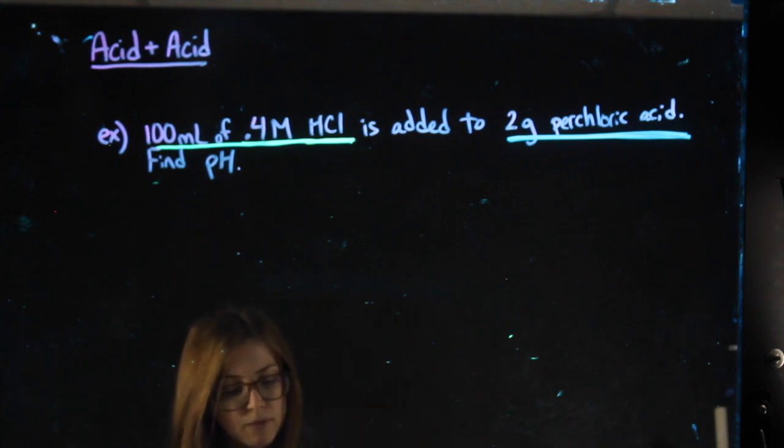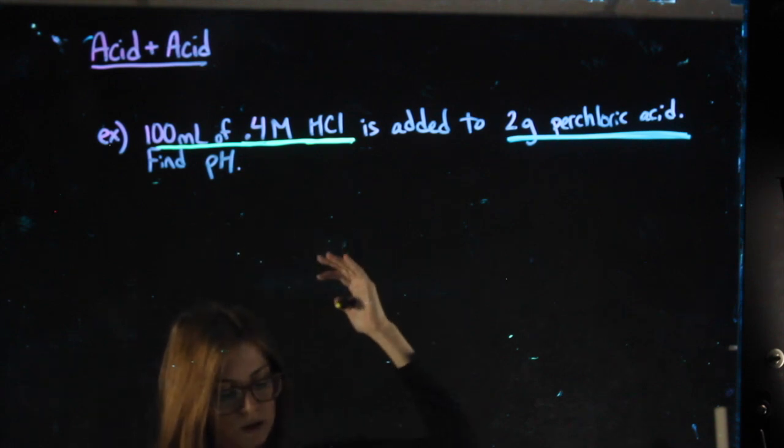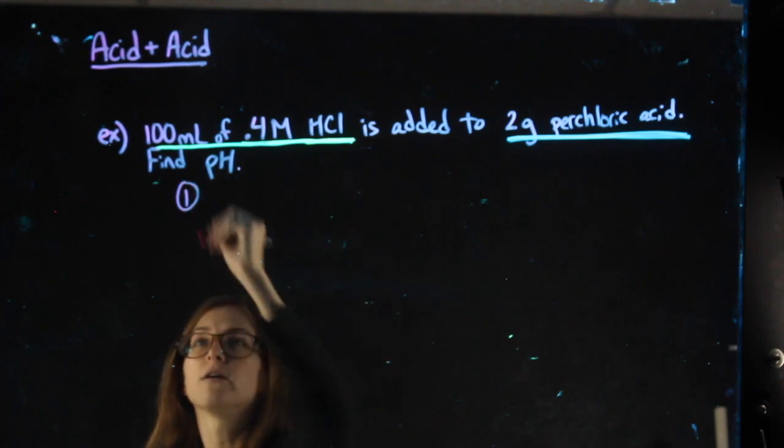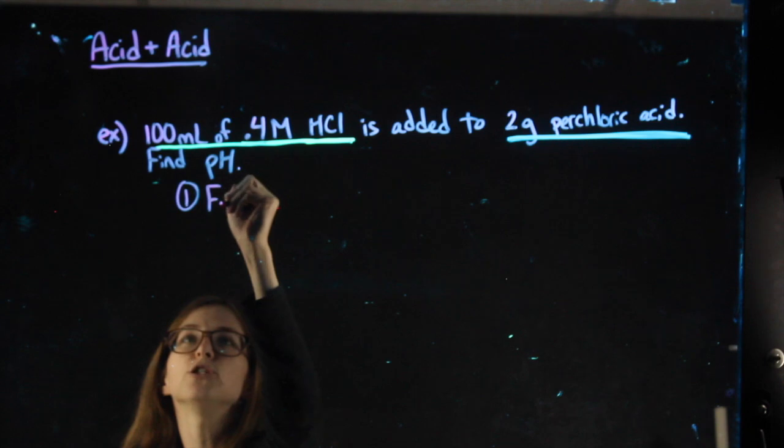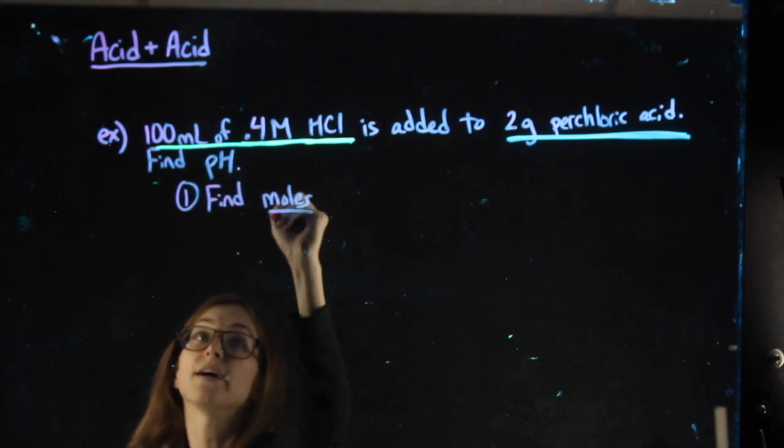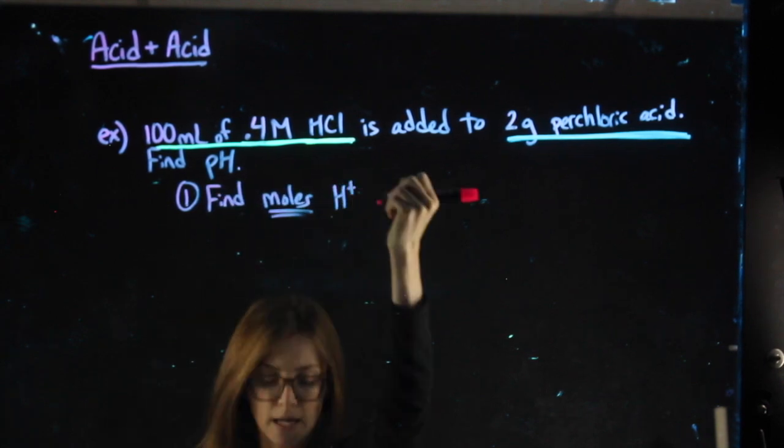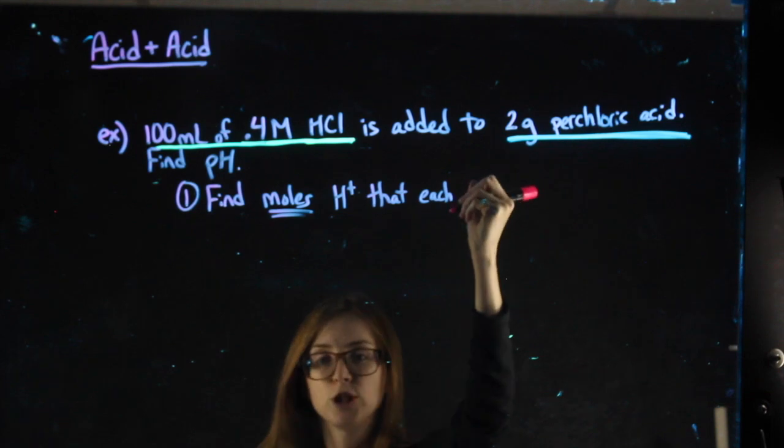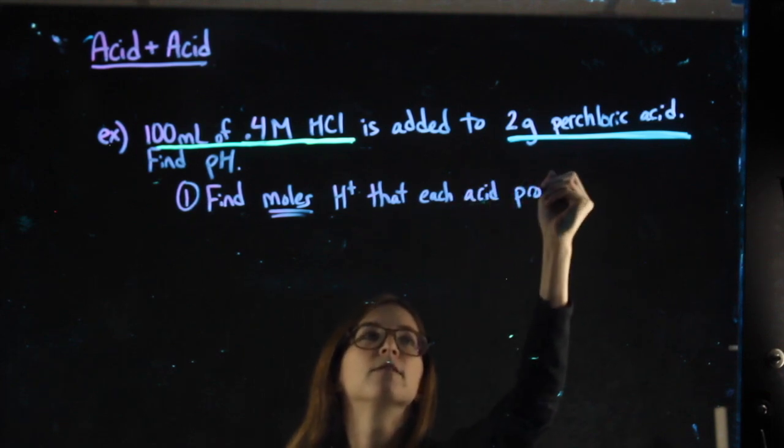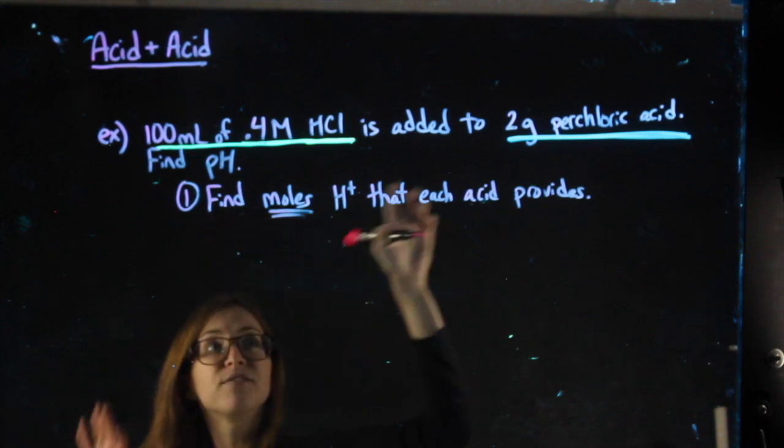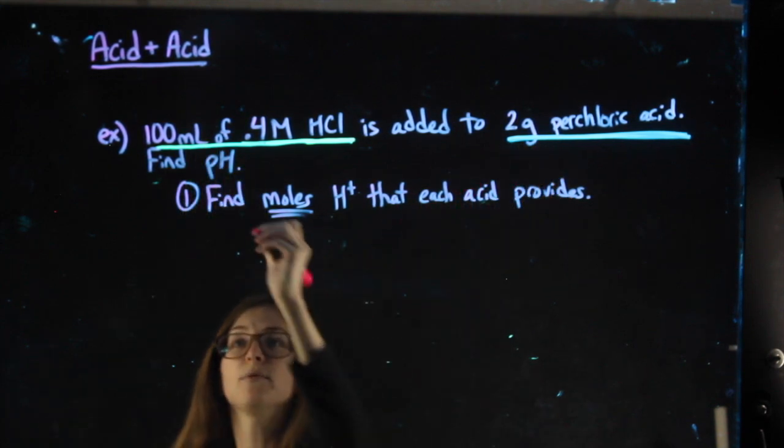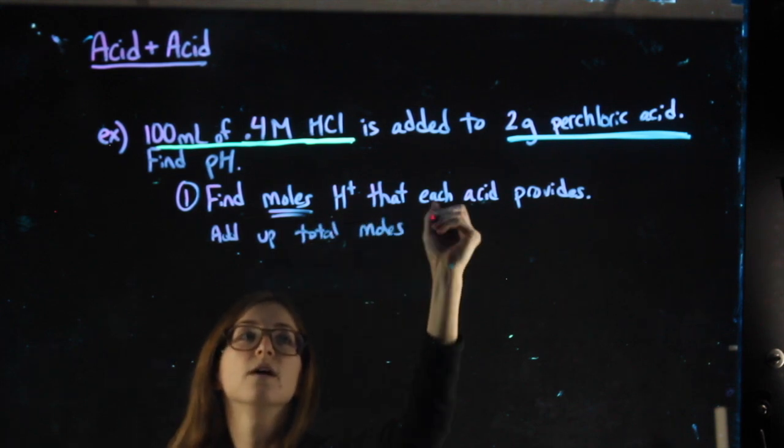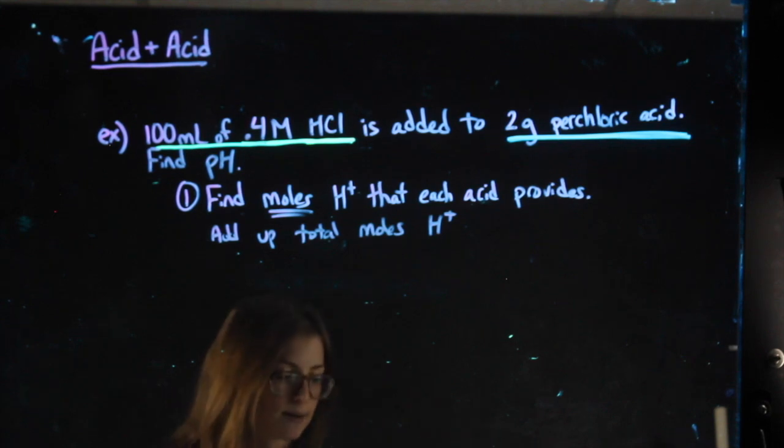So for each acid, I want to do three steps. Those three steps in general will be, first we want to find the moles of H+, moles not molarity, find the moles of H+ that each acid provides. See how much each one brings to the table. And after we find the moles that each acid brings to the table, we will add up the total moles of H+. That's my first step, so let's do that step together.